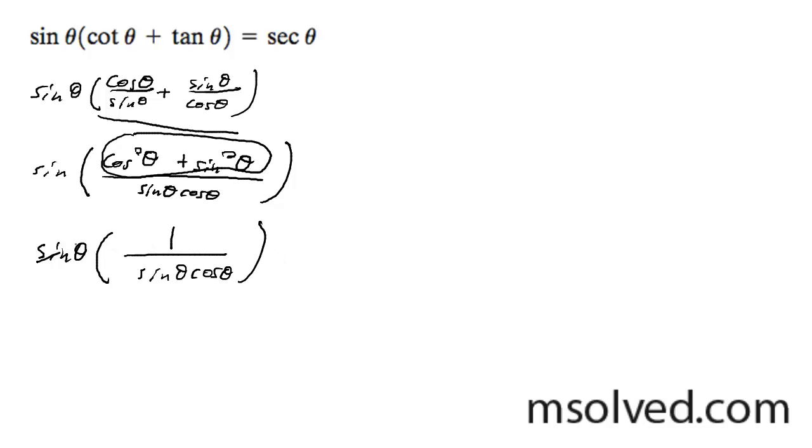You see here, if you multiply by sine theta, these sine thetas cancel out, and you get 1 over cosine theta, which is equal to the secant of theta.